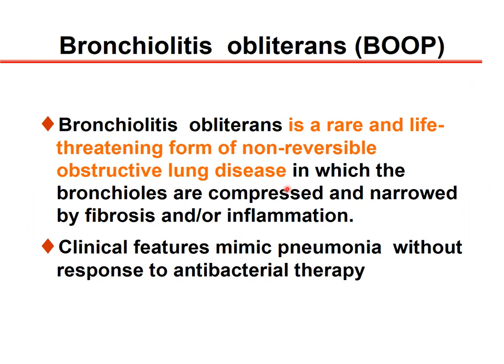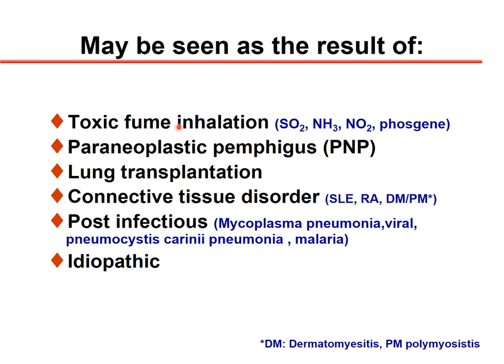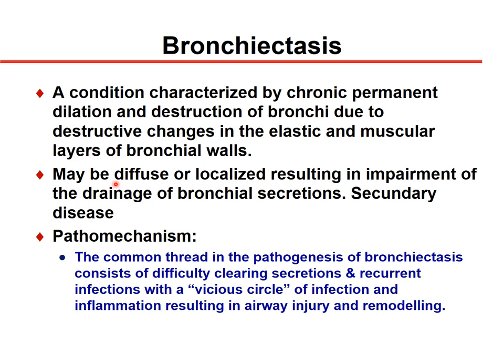Bronchiolitis obliterans is a rare and life-threatening form of non-reversible obstructive lung disease in which the bronchi are compressed and narrowed by fibrosis or inflammation. The clinical features mimic pneumonia without response to antibiotic treatment. Causes include toxic fume inhalation such as sulfur dioxide, ammonia, nitric oxide, or phosgene, or paraneoplastic pemphigus, lung transplantation, connective tissue disorders, autoimmune disorders, or post-infection due to Mycoplasma pneumoniae or viral infections.